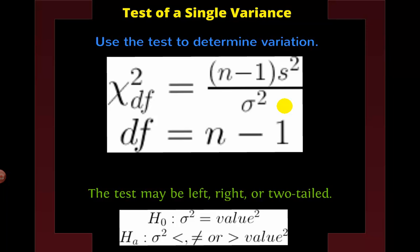The chi-square formula for variance is: chi-square equals (n - 1) times the sample standard deviation squared, divided by the population standard deviation squared. The degrees of freedom again are n minus 1. This is the only chi-square test where we can have left-tailed, right-tailed, or two-tailed tests, because we're looking to see if they're equal to each other, less than, or greater than.